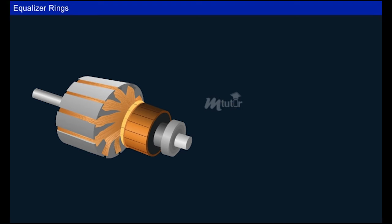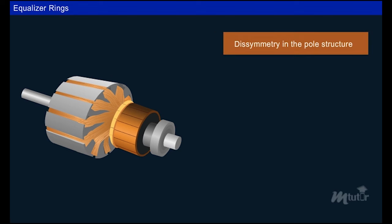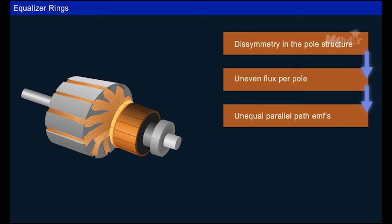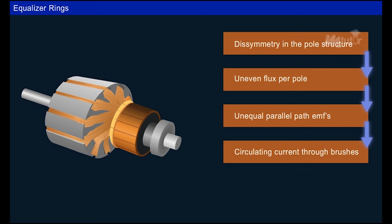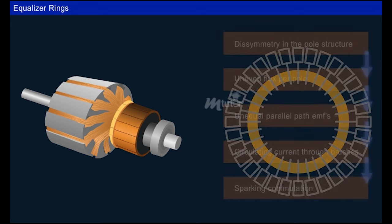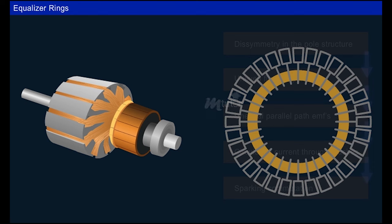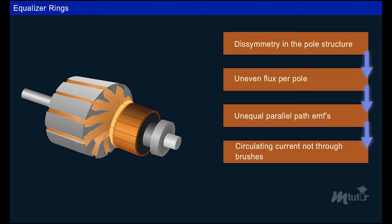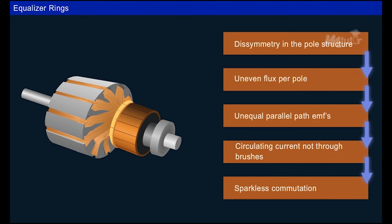In DC machines, due to possible dissymmetry in the pole structure, there is uneven distribution of flux per pole and EMF in the parallel paths, which causes unequal circulating currents to flow in the armature through the brushes, causing overheating and severe sparking during commutation. Equalizer rings are used to avoid such overheating and sparking. They route the circulating current to the coil itself and help produce equal EMF in the parallel paths, resulting in sparkless commutation.